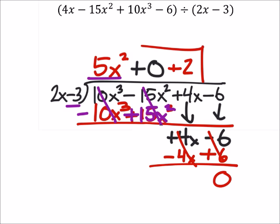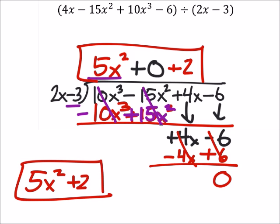So, this would kind of be our answer. But more formally, we would write this as 5x squared plus 2. Because we don't usually write plus 0. Just, again, as a formality.